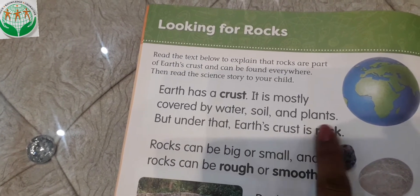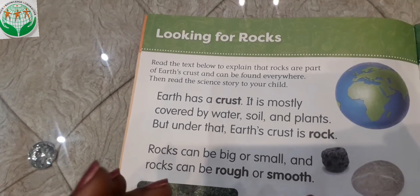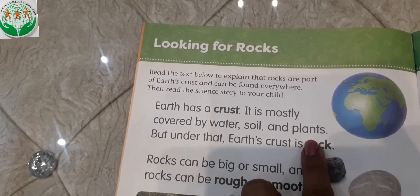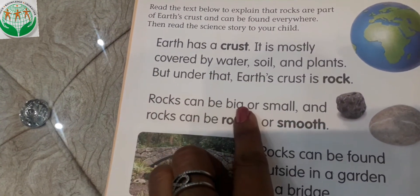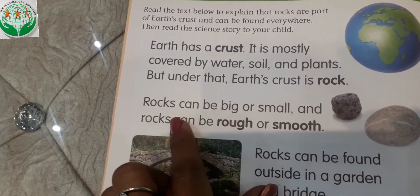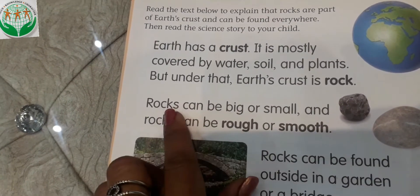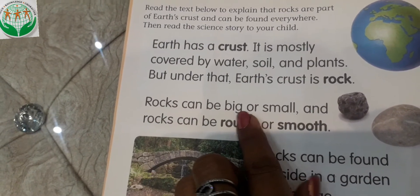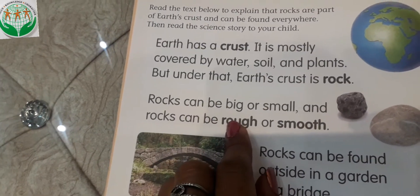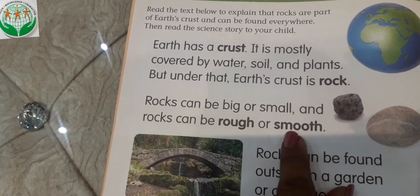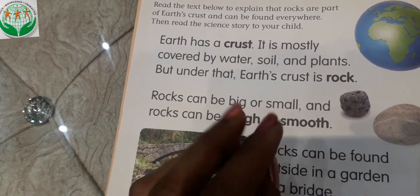Earth's crust is rock. The material is rock — it is hard. Rocks can be big and small. Rocks can be rough and smooth. Some rocks are smooth and soft; they don't feel harsh.